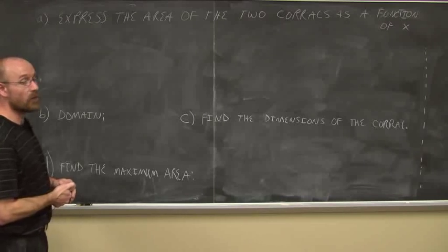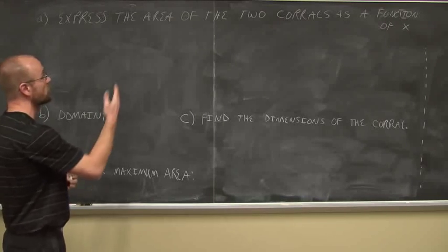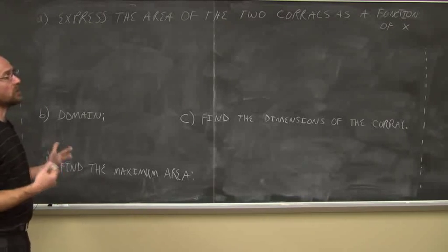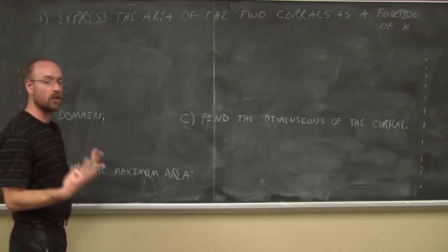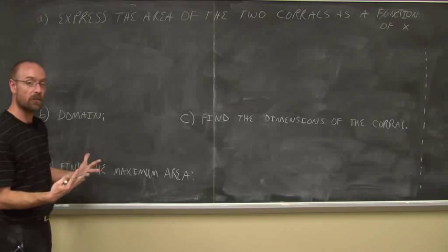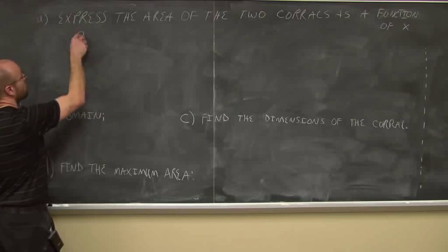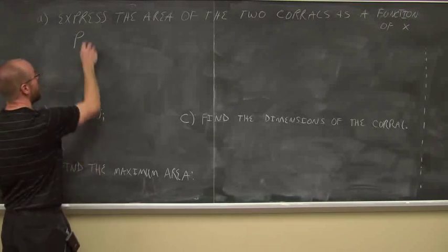We're asked to express the area of the two corrals as a function of x. So what do we need to bring to the table? What do we need to know when we read that problem a third time? There's something about the perimeter of the fence or the amount of fencing I have.